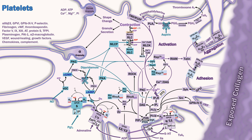Another route of platelet inhibition targets the other arm of positive feedback, ADP. Clopidogrel and prasugrel are pro-drugs whose metabolites irreversibly inhibit the P2Y12 receptor, while ticagrelor directly and reversibly inhibits the same receptor. The anti-alpha-2-beta-3 agents abciximab and tirofiban cause profound platelet inhibition and tend to be used only briefly in acute coronary syndromes and PCI. Vorapaxar is a novel PAR1 inhibitor that inhibits thrombin-mediated activation. Prostacyclin and nitric oxide cause platelet inhibition in the same fashion as the endogenous forms produced by the endothelium.